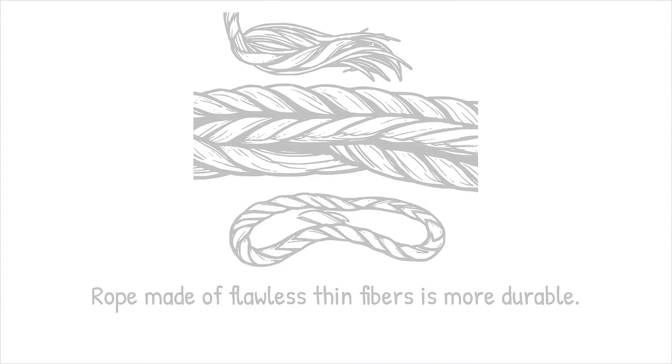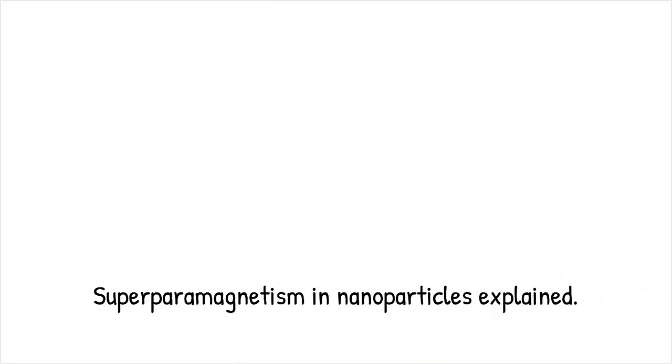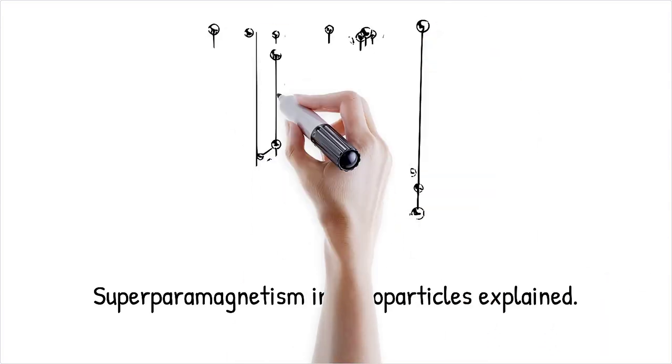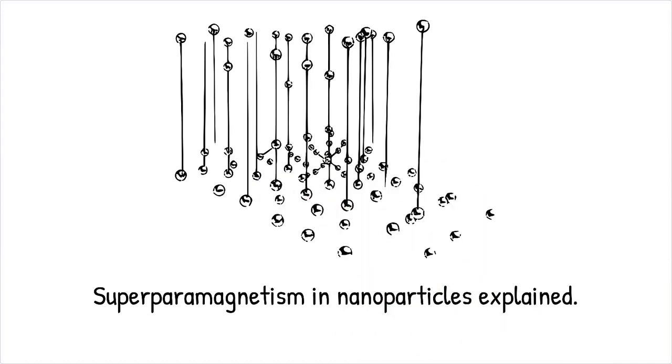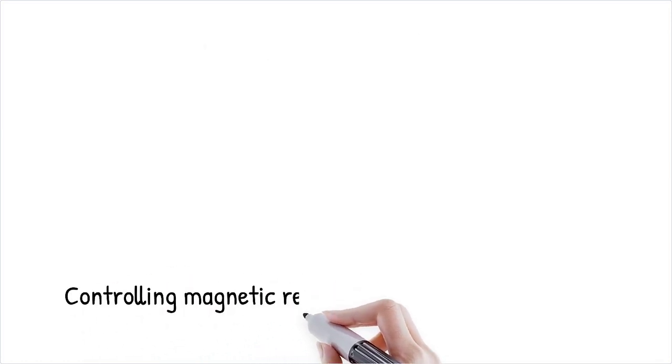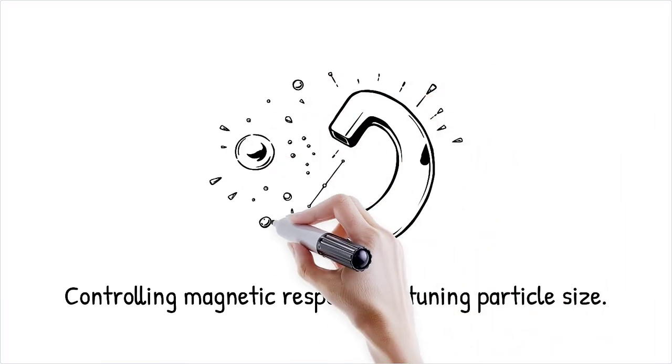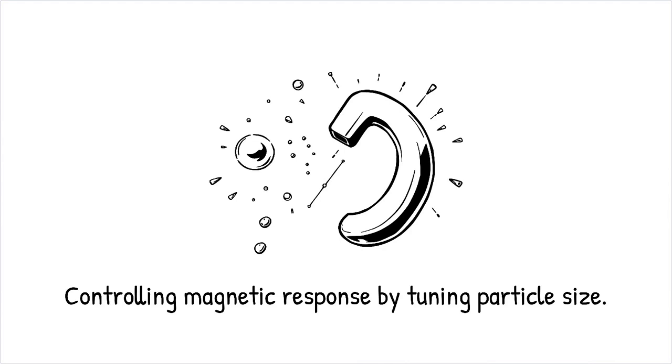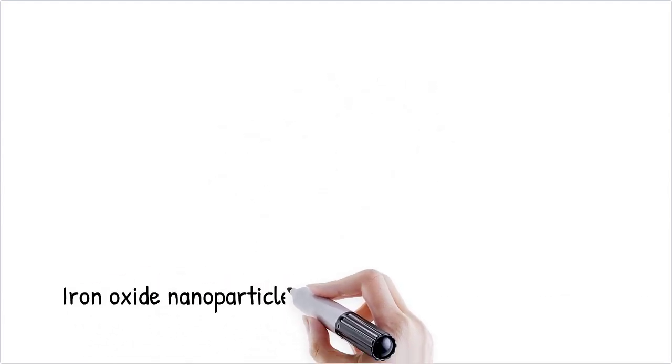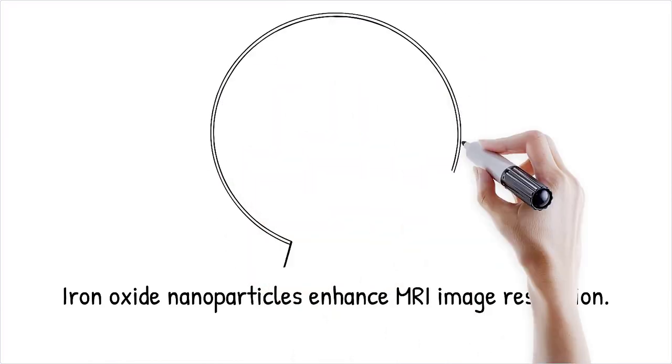Magnetic nanoparticles below a critical size, around 10-20nm, exhibit superparamagnetism, where they lose permanent magnetism in the absence of an external magnetic field. This occurs because thermal fluctuations randomly align the magnetic dipoles, preventing remanent magnetization. Superparamagnetic behavior is crucial for targeted drug delivery, magnetic resonance imaging, MRI, contrast agents, and high-density data storage. By tuning particle size, researchers can control magnetic response for precise biomedical and industrial applications.